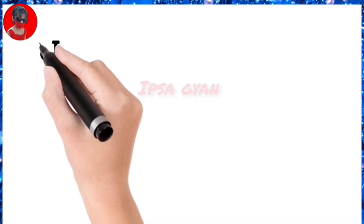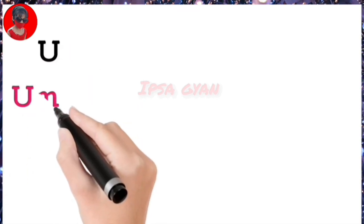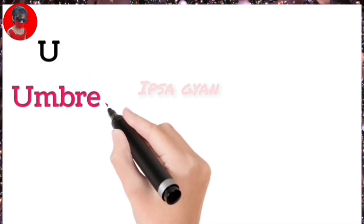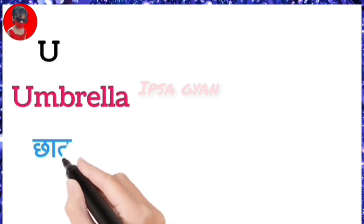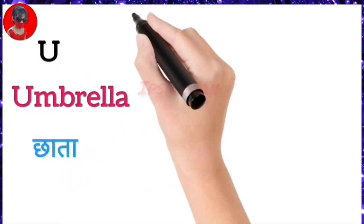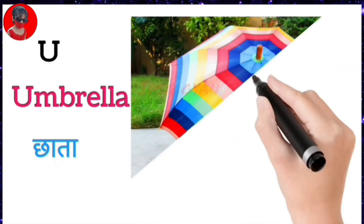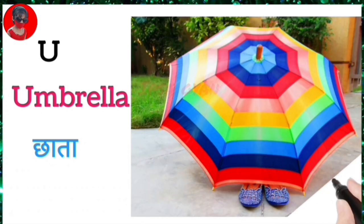U for umbrella, umbrella means chhata. U for umbrella, umbrella means chhata.